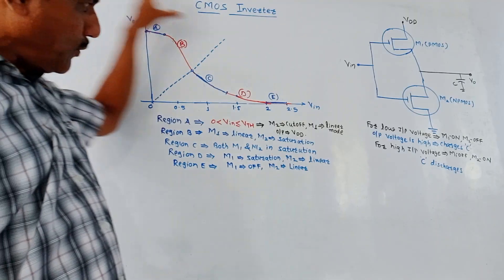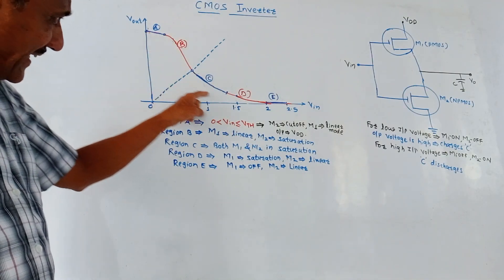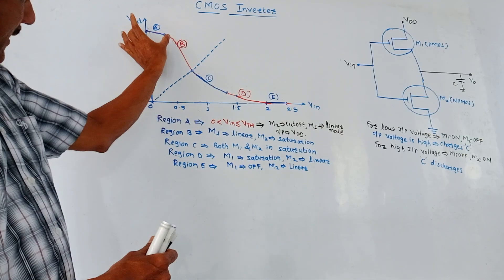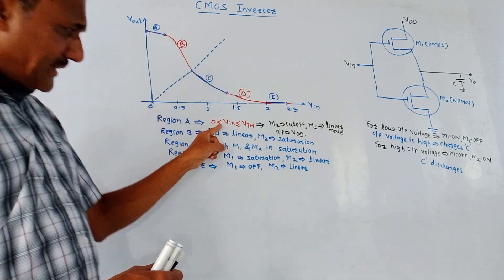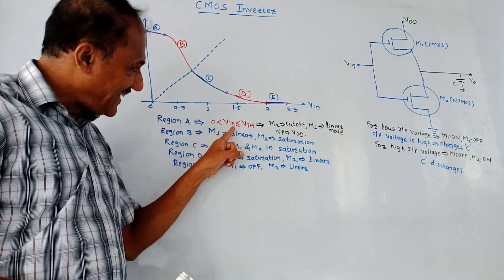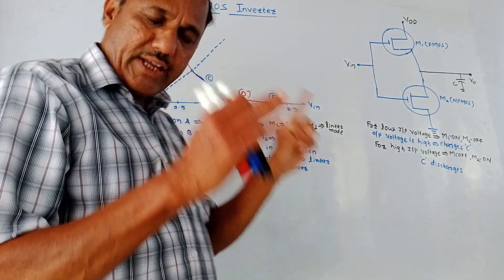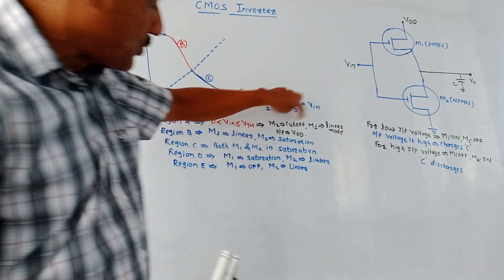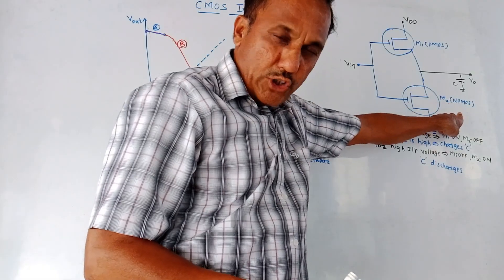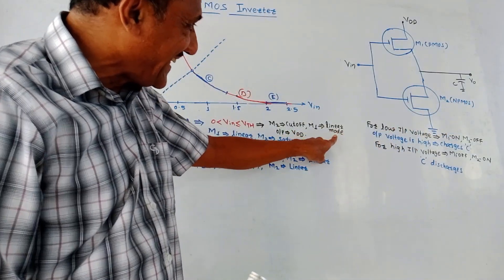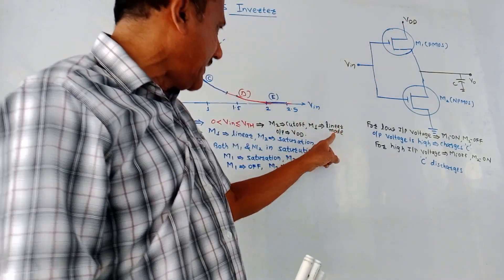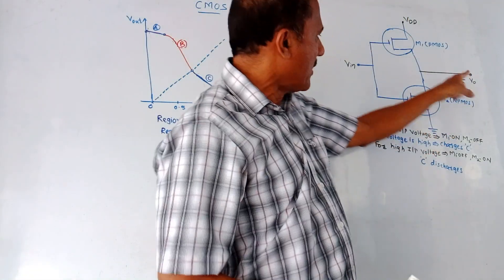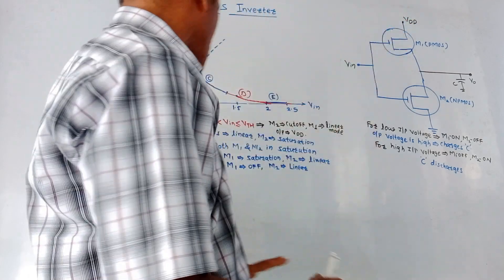Next is the transfer characteristics — it is a graph of Vout (output voltage) versus input voltage. The graph is divided into different regions. In Region 1, characterized by 0 ≤ VIN ≤ VTH, where VTH is the threshold voltage, M2 is cut off — that is, the N MOSFET is switched off — and M1 is in linear mode. So output equals VDD, because VDD is directly available at the output.